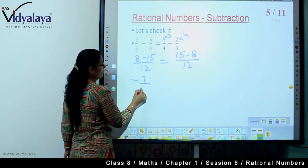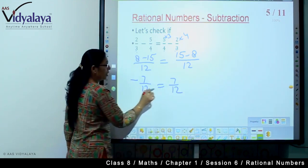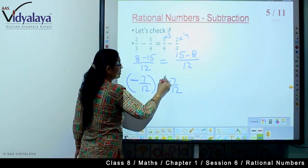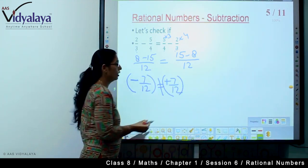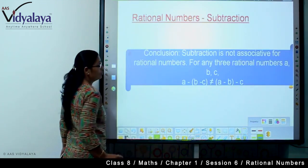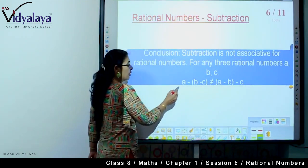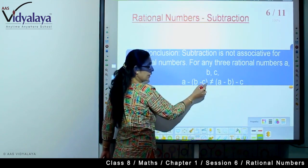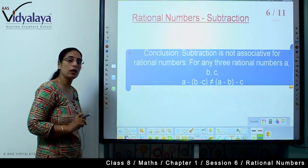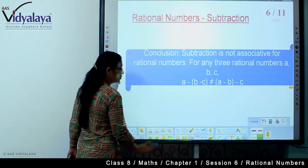Now let us see, our answer is minus 7 upon 12 and this is 7 upon 12. Can we say both are equal? No, we cannot say both are equal because minus sign is there and plus sign is there. So we cannot say they are equal. These are not equal.